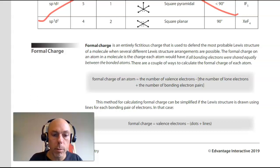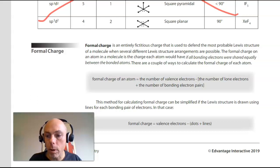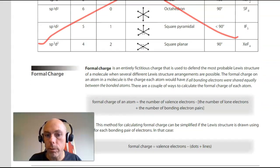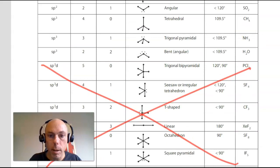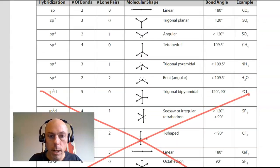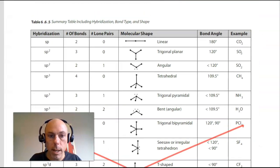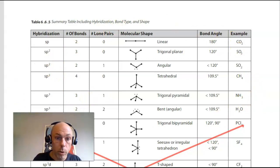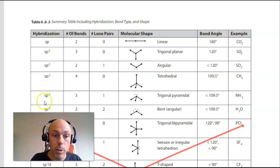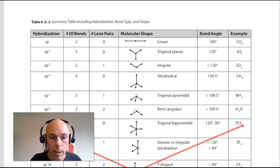Before I begin on formal charge, just want you to be aware that in our book is the table that you saw at the end of the last lecture, formatted slightly differently about hybridization. The top half of this table gives us the ability to, if we know how many electron groups there are and how many of those are lone pairs, predict what the hybridization will be. Remember you don't have to do the expanded octet hybridization — nothing involving D sub-level electrons.